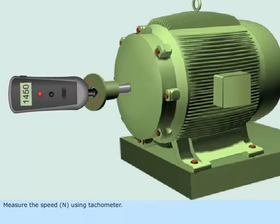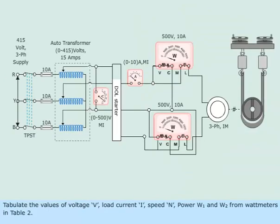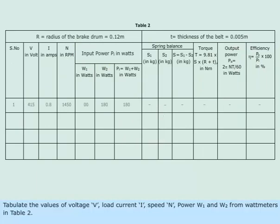Measure the speed N using tachometer. Tabulate the values of voltage V, load current I, speed N, power W1 and W2 from wattmeters in Table 2.